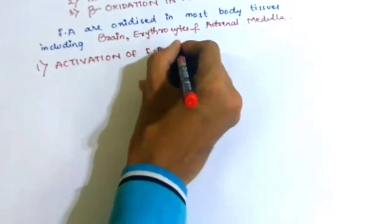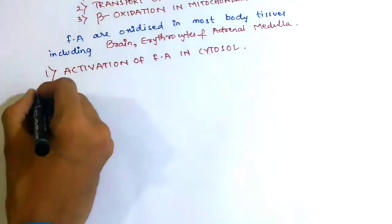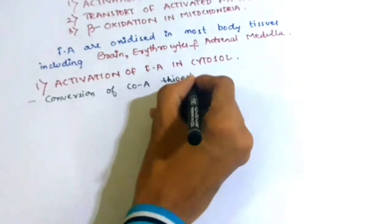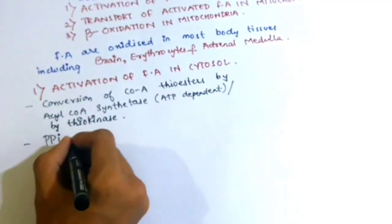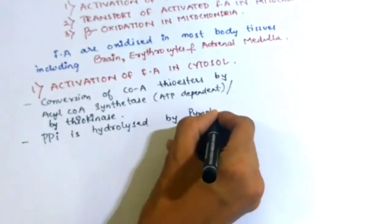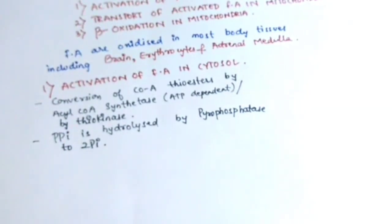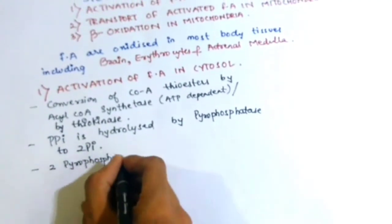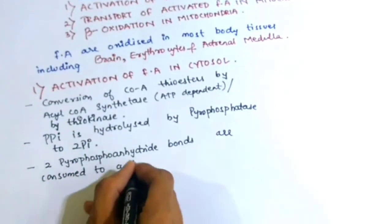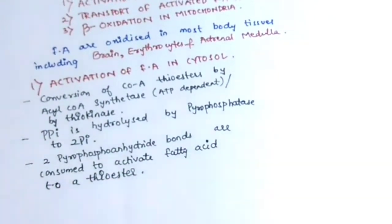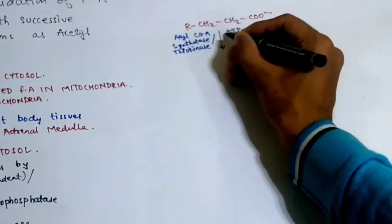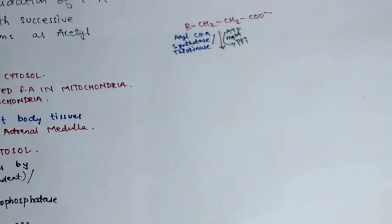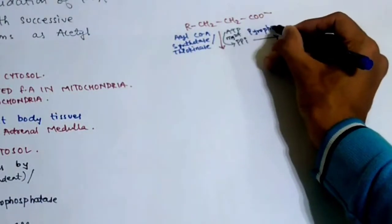Now let's see the activation of fatty acids in the cytosol. It involves the conversion to coenzyme thioesters by acyl-coenzyme synthetase, which is an ATP-dependent enzyme, or by thiokinase. Pyrophosphate is hydrolyzed by pyrophosphatase into two molecules of inorganic phosphate. Two pyrophospho-anhydride bonds are consumed in order to activate fatty acids to a thioester. The fatty acid in the presence of acyl-coenzyme synthetase leads to breakdown of ATP into pyrophosphate, which further in the presence of pyrophosphatase gets converted into two inorganic phosphate molecules.